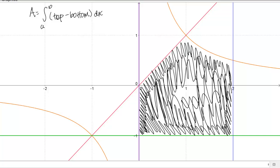Let's take a closer look at this region here. My bottom function is pretty obvious. It's this line in green here, this y equals negative 1. That's definitely on the bottom of the region.